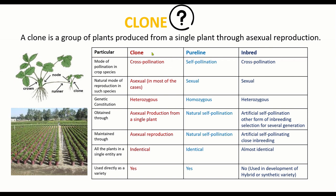In case of clones, the plants from which we derive clones are cross-pollinated crop plants, while in case of pure lines and inbred lines they are self-pollinated and cross-pollinated crop plants respectively. The mode of reproduction is asexual in case of clones, while for pure lines and inbred lines it involves crossing between two parents. The genetic constitution of a clone — frequently asked in competitive exams — is heterozygous, while pure lines are homozygous.